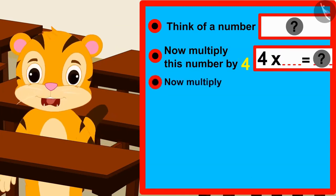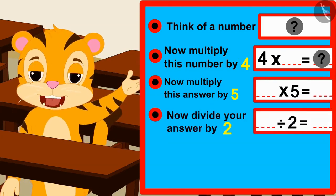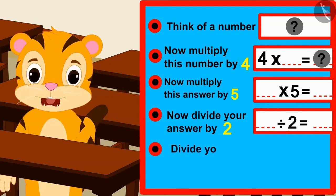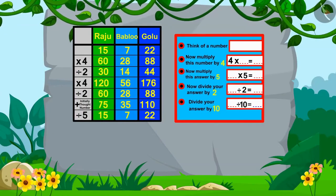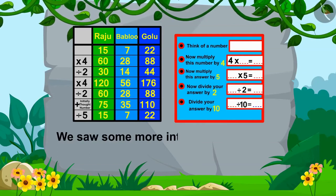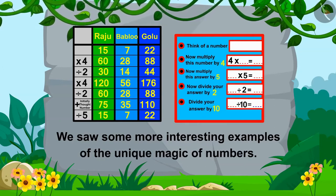Now, multiply this answer by 5. Now divide your answer by 2. Now, at the end, if you divide your answer by 10, you will find your previously thought number only. Isn't this some interesting magic of mathematics? Children, in this video we saw some more interesting examples of the unique magic of numbers. We will see more interesting examples of this in the next video.